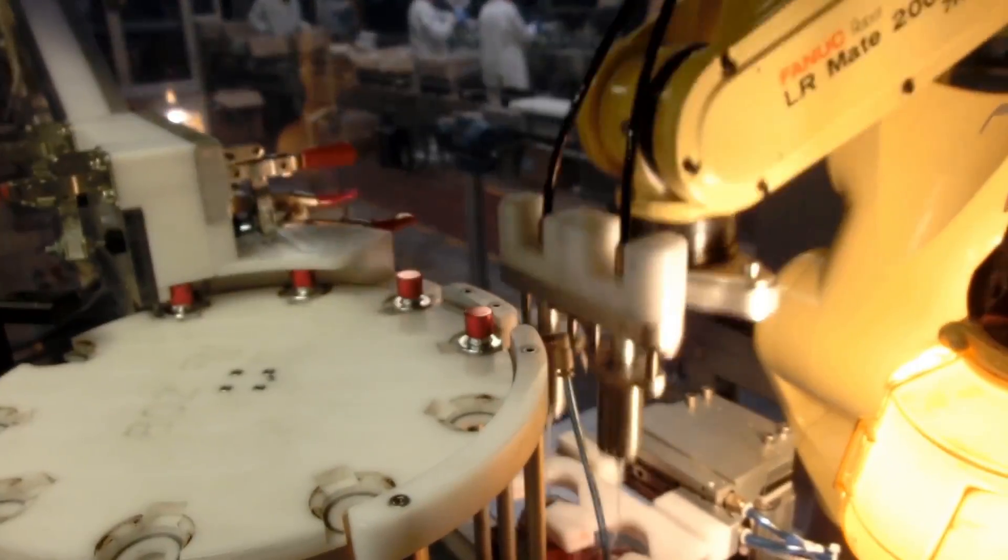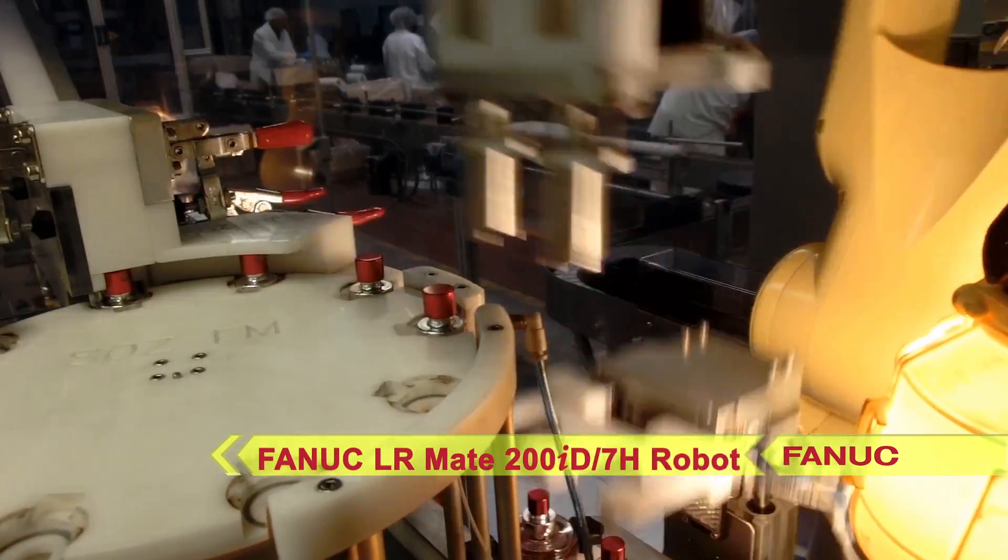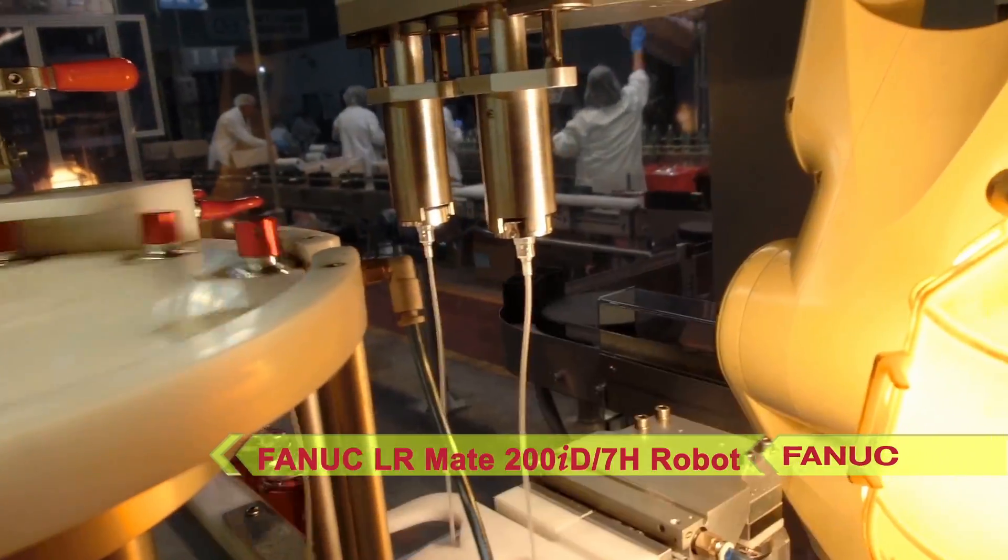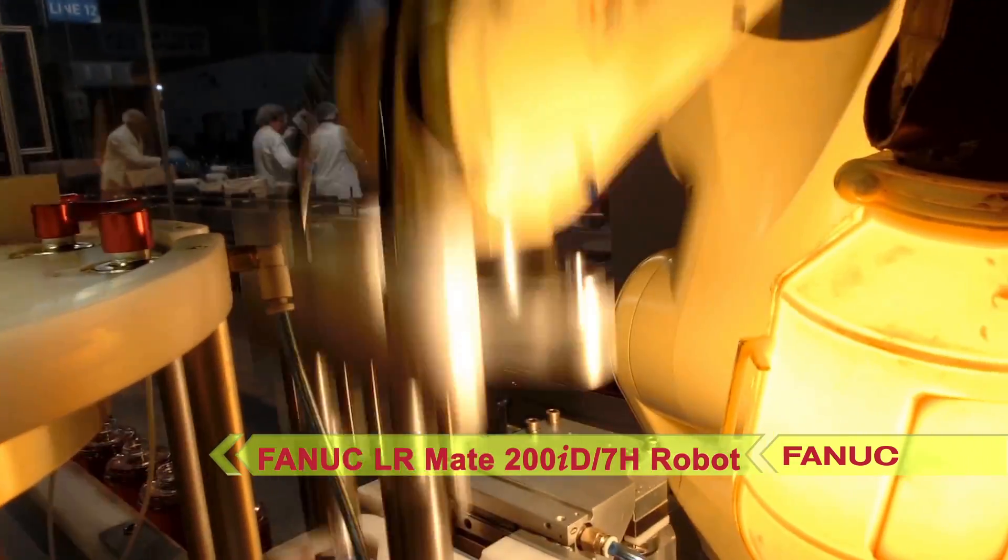The fast and compact FANUC LR-Mate 200ID robot picks pumps two at a time out of a star wheel and places them into the bottles.